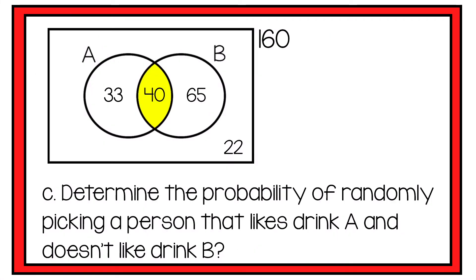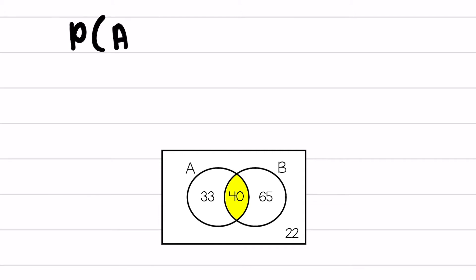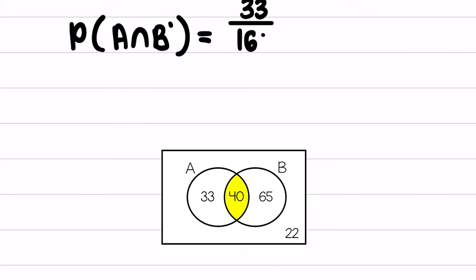The next question asks: determine the probability of randomly picking a person that likes brand A but not brand B. That is the probability of A and not B, which equals the people just in the A-only circle — 33 people out of the 160 surveyed, which gives approximately 21 percent.